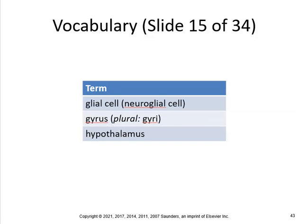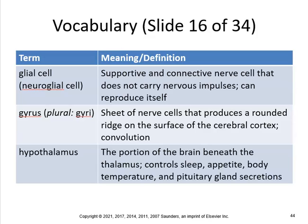Glial cells, gyrus, and the hypothalamus. Glial cells are neural glial cells — supportive and connective nerve cells that do not carry nerve impulses. They can reproduce through mitosis, and anything that goes through mitosis can develop cancer. Gyrus is a sheet of nerve cells that produces a rounded ridge on the surface of the cerebral cortex — it's convolution, those bumps in your brain. The hypothalamus is the portion of the brain beneath the thalamus. The thalamus is air traffic control, and the hypothalamus controls sleep, appetite, body temperature, and pituitary gland secretions.